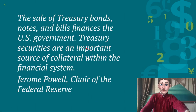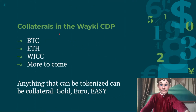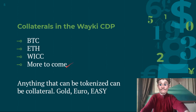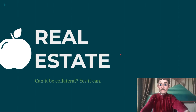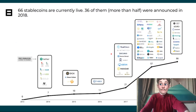I have a quote from Jerome Powell, Chair of the Federal Reserve, which says that treasury bonds, notes, and bills finance the US government. These treasury securities are the source of collateral within the financial system. The collateral in the WaykiChain CDP is a little different — it's Bitcoin, Ethereum, and WICC, with more to come. Anything that can be tokenized can be collateral: it could be gold, euro, and even real estate — that's a bit harder, but since it can be tokenized, it can be used as collateral.